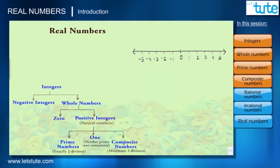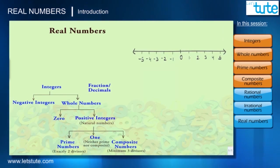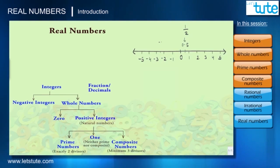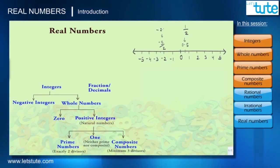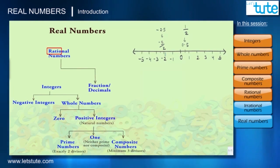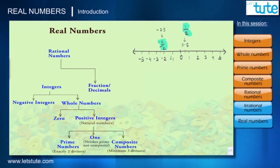On the number line, in between integers there are many more numbers present in the form of fractions or decimals. For example, between 0 and 1 there is 0.5, which can be written as 1/2. Between −2 and −3 there is −5/2, or −2.5 in decimal form. These fractions are called rational numbers. The word rational comes from the word ratio — 1/2 and −5/2 are ratios of two integers, so they are called rational numbers.